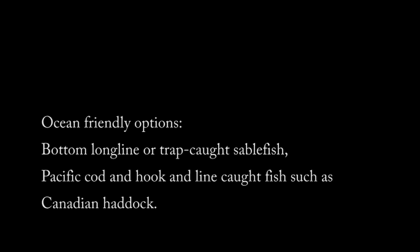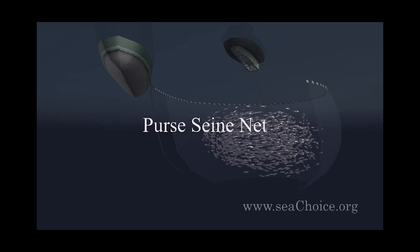The holes of gill nets are deliberately sized so that a fish's gills get stuck when they try to swim through. Habitat impacts are concerns for gill nets, as is the bycatch of marine mammals and seabirds.